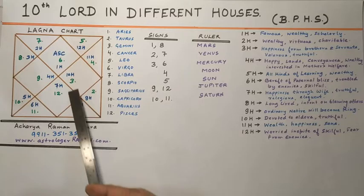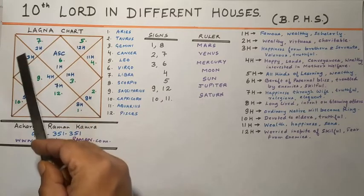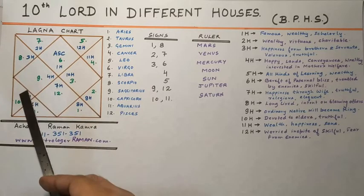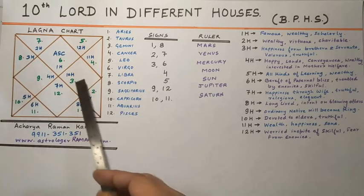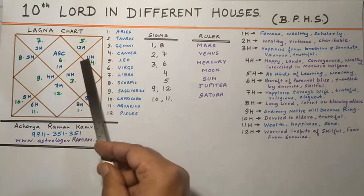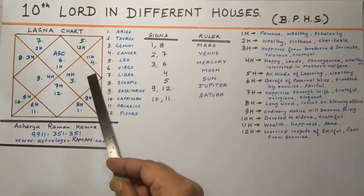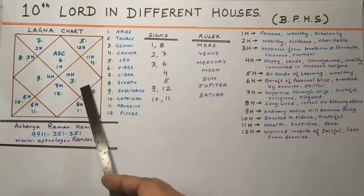And Capricorn and Aquarius would be Saturn. Now the 10th house would be counted: 1, 2, 3, 4, 5, 6, 7, 8, 9, 10. We will do the results of the 10th Lord in different houses.